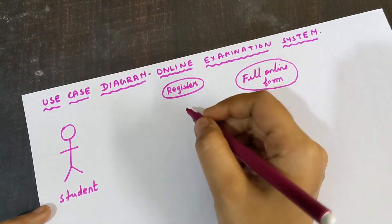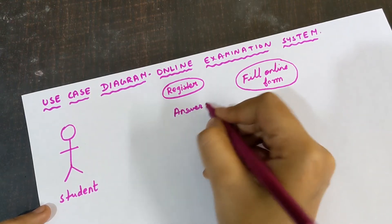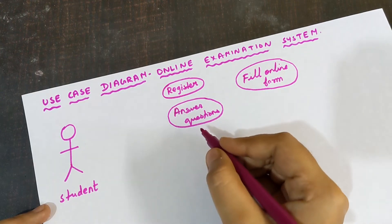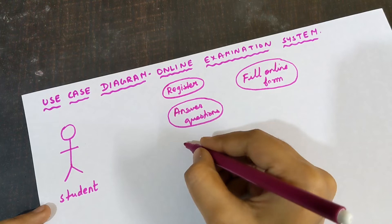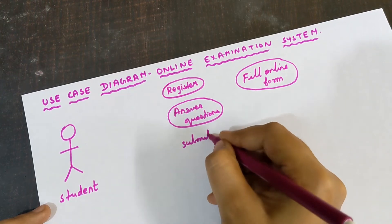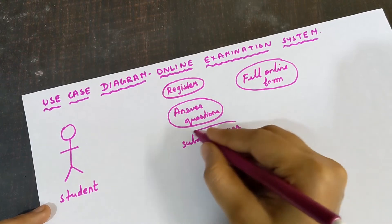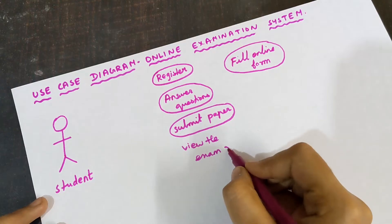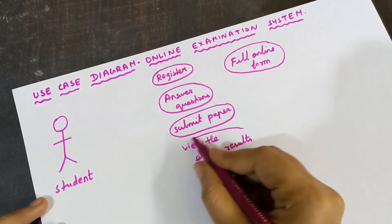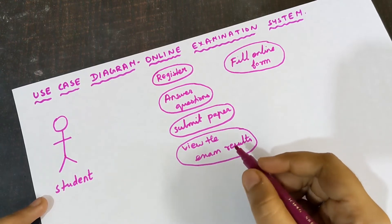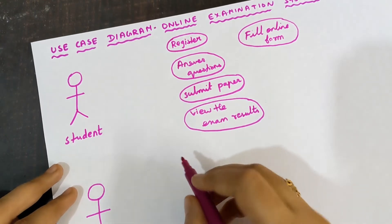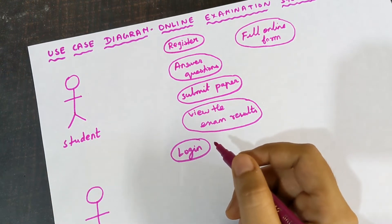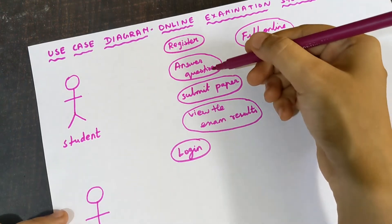The next use case is Answer the Questions — the student needs to answer all questions given in the question paper. After answering, the student needs to Submit the Answer Paper. After submitting, the student can View the Exam Results to see the score obtained. Login is also very important — the student must first log in to the portal before being able to perform these operations.